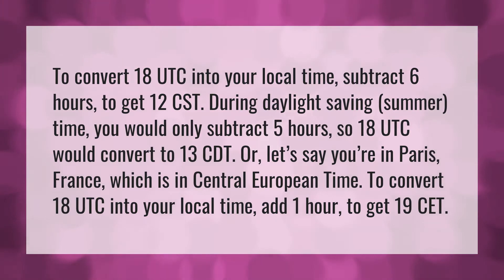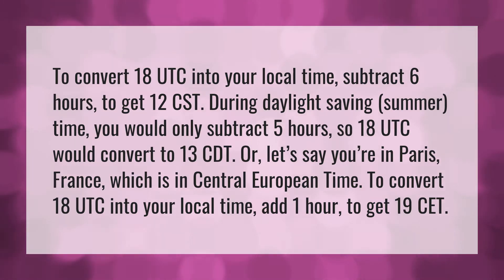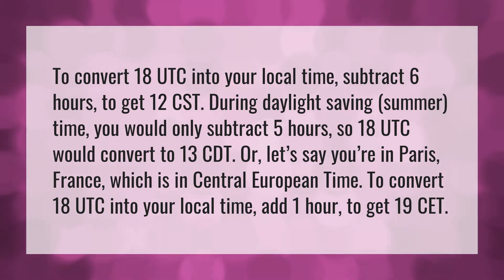To convert 18 UTC into your local time, subtract 6 hours to get 12 CST. During daylight saving summer time, you would only subtract 5 hours, so 18 UTC would convert to 13 CDT.